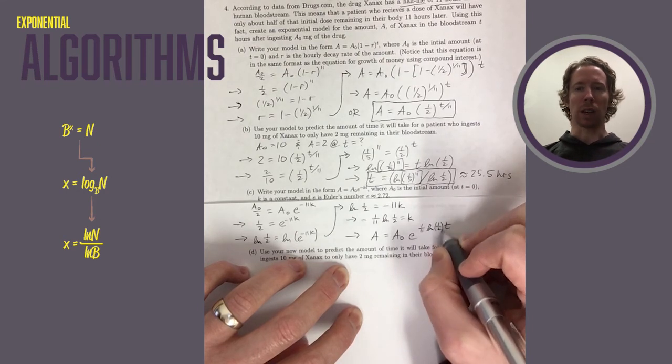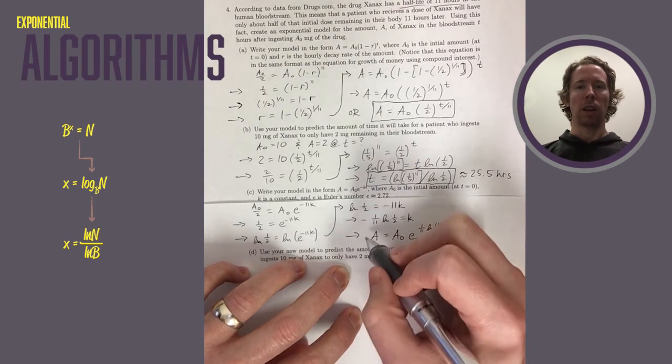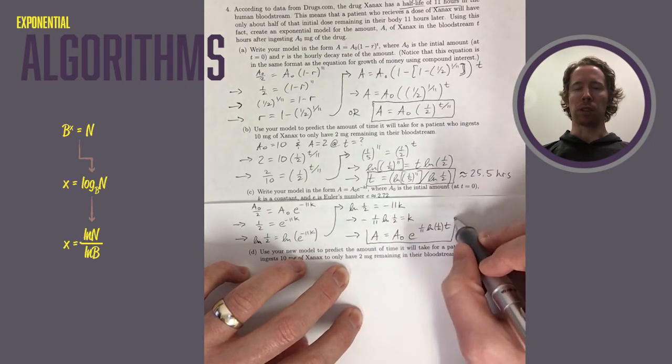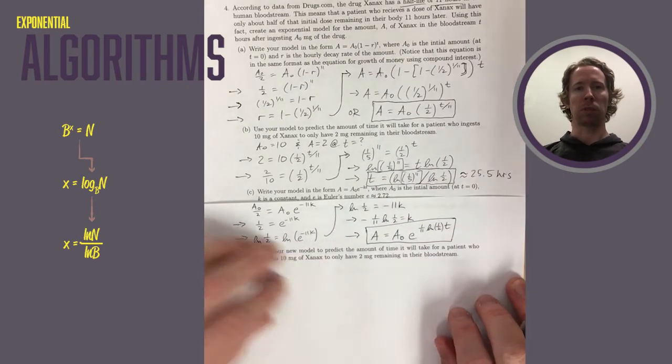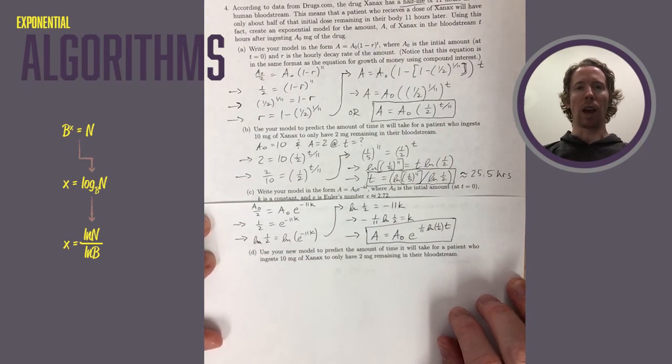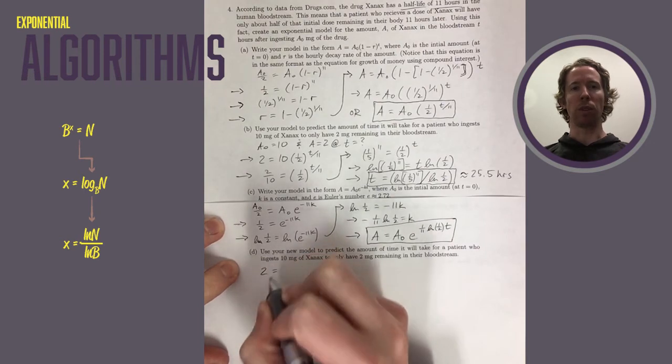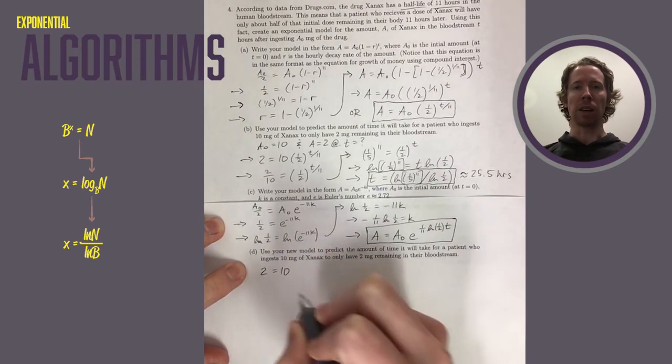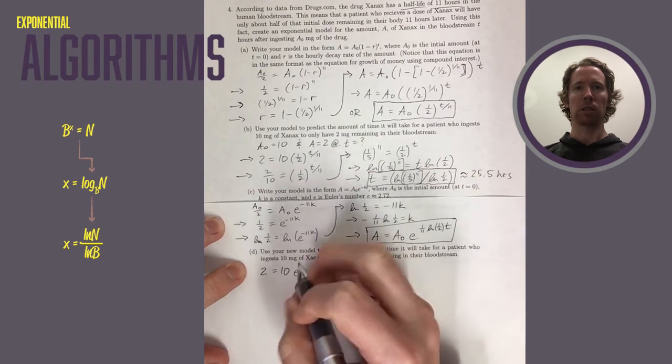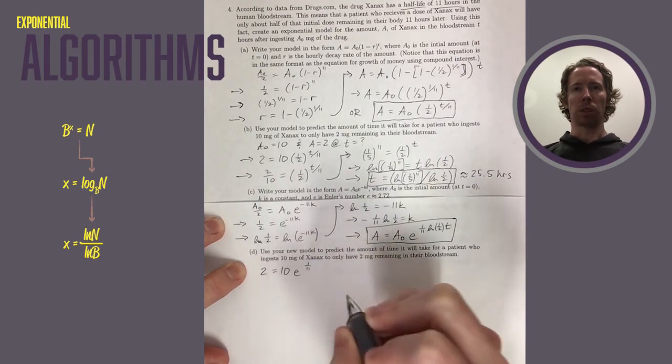In part D, you are answering the same question we answered in part B. How long will it take for a patient who took 10 milligrams of Xanax to only have 2 milligrams left in their blood? So plug in 2 for the A and 10 for the initial amount, A0. Divide both sides by 10.